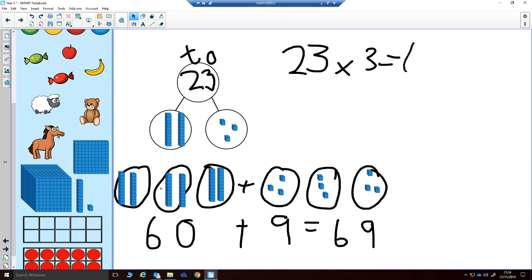So the answer to 23 times 3 is 69. That is the end of the first part on the part-whole model. The second part is actually looking at short multiplication, and I will show you that in another video.